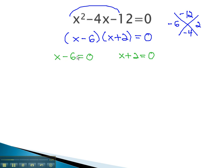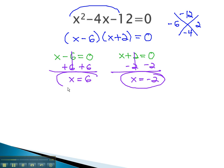We can quickly solve these equations by adding 6 to the first to get x equals 6, and subtracting 2 from the other to get x equals negative 2. These are the two numbers that, when plugged in for x in the original equation, will give us zero for our final answer.